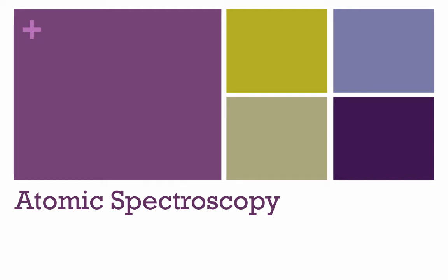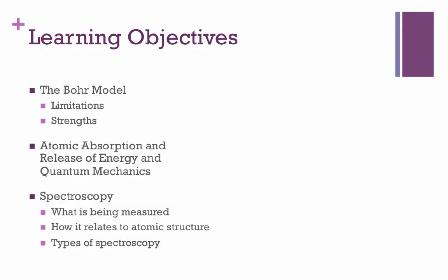In this video, we're going to discuss atomic spectroscopy and how it can be used to learn and identify the internal structure of the atom. We'll begin with a quick overview of the objectives. We'll start with a recap of the Bohr model, focusing on its limitations. That leads into the concept of atomic absorption and release of energy, and ultimately quantum mechanics. Last but not least, that leads us into spectroscopy itself — a tool to measure atomic structure by measuring what type of light comes out, and inferring that structure based on the light we actually see.